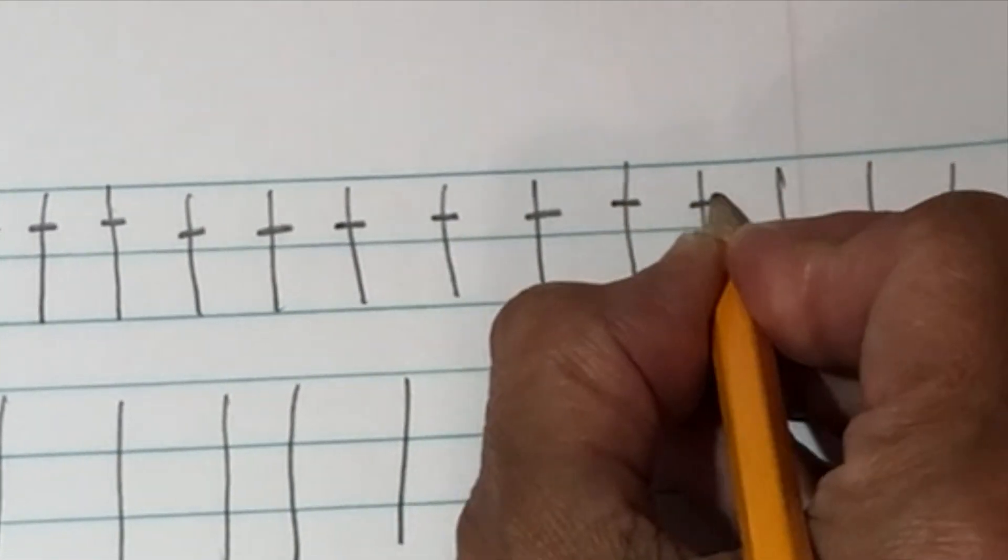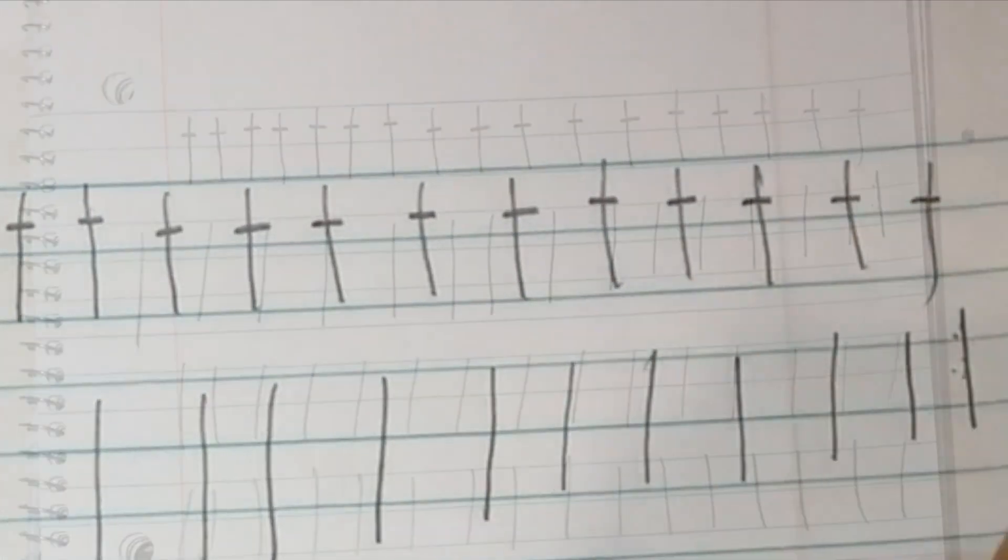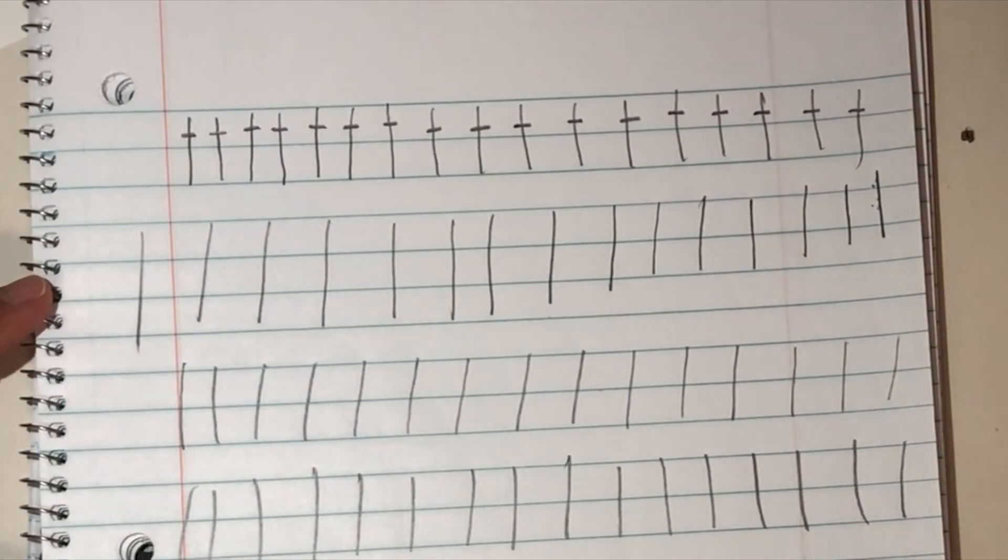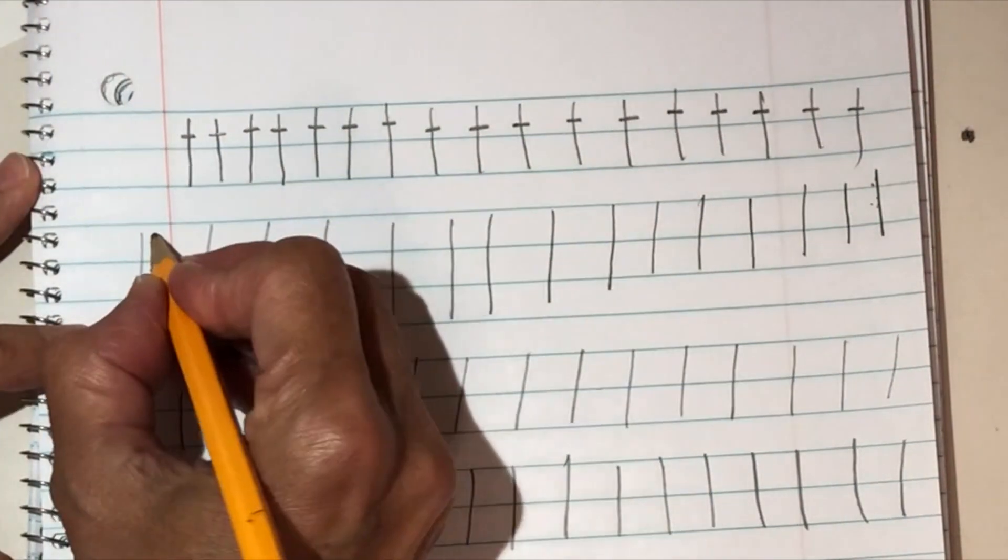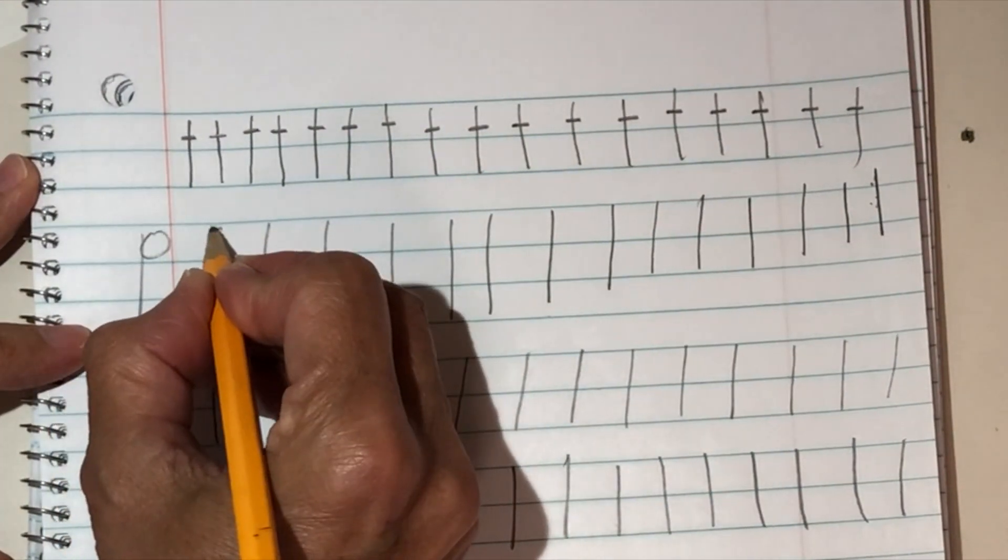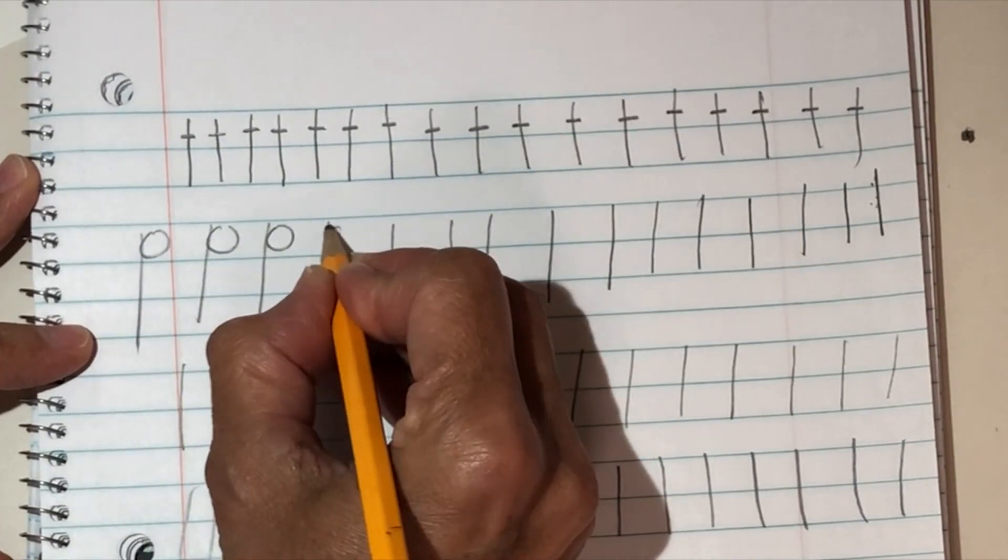We're drawing a little line to make the letter T. Now we're gonna draw the letter P. Draw a little circle on your next line and that looks like the letter P.